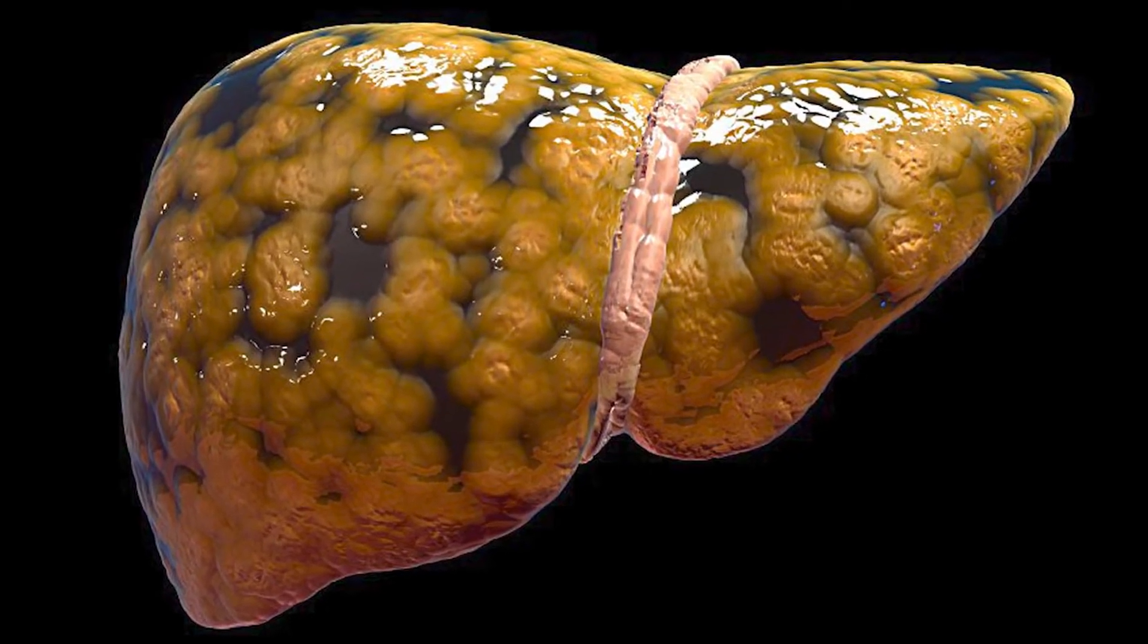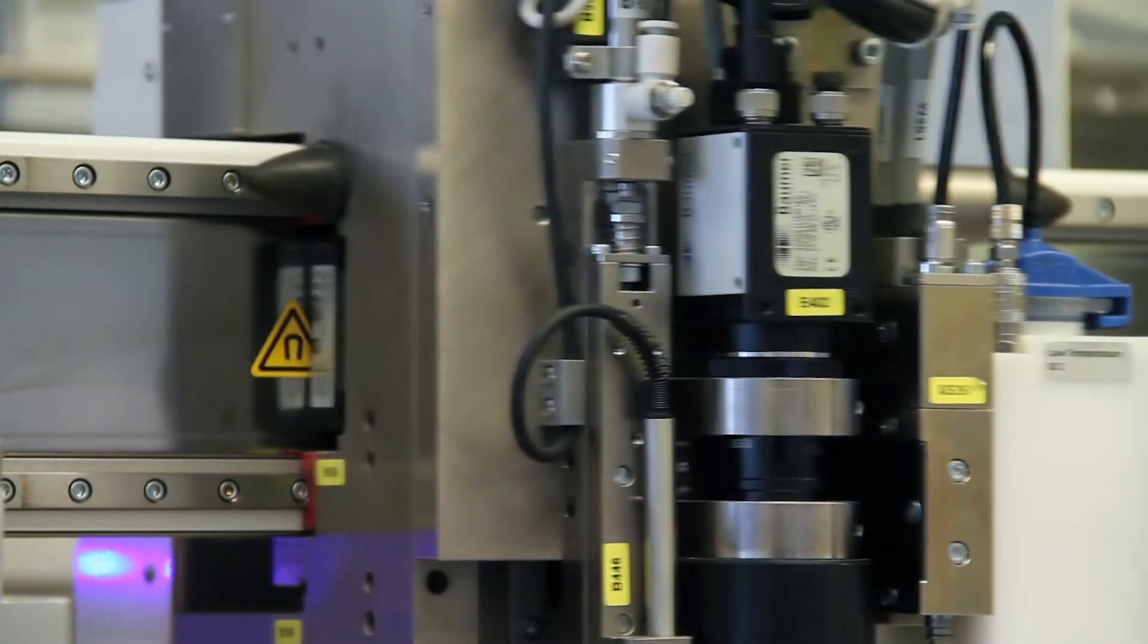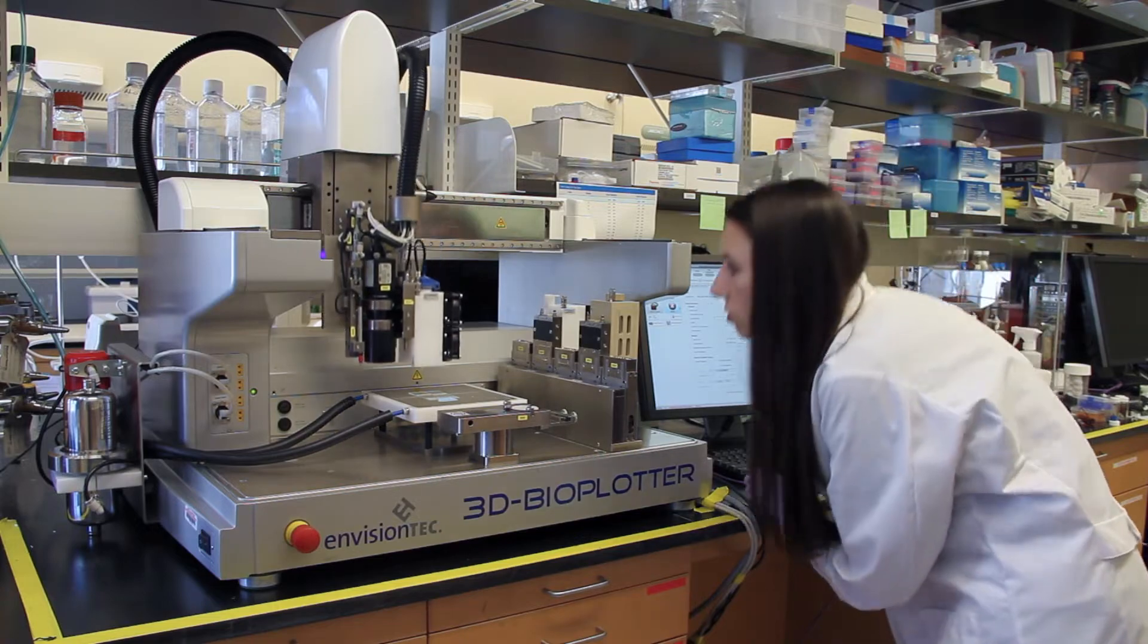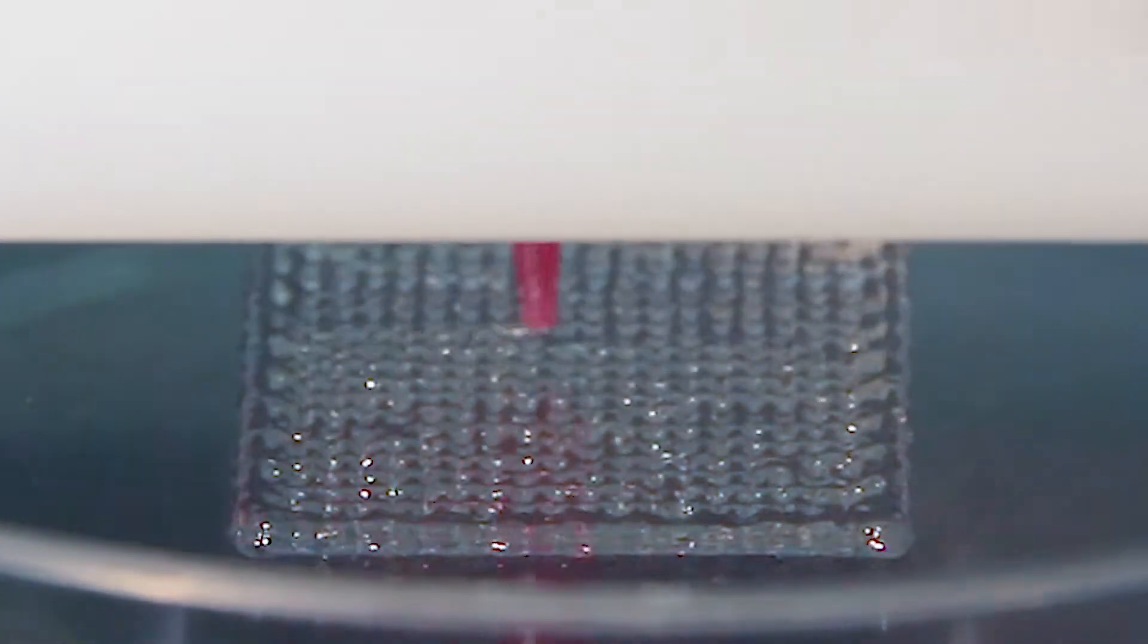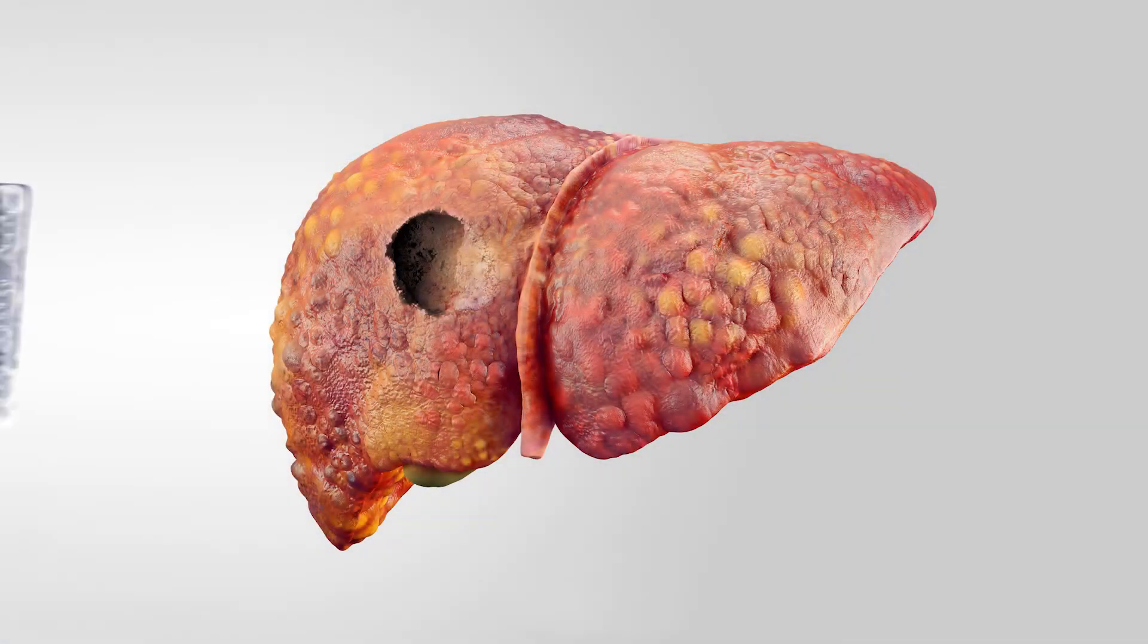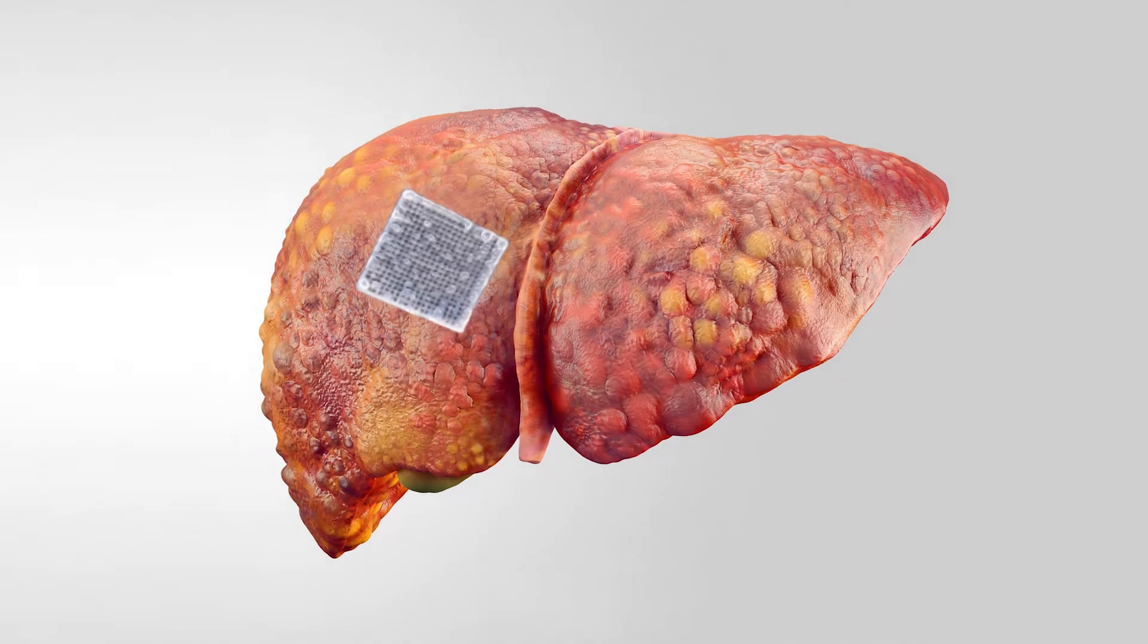But there are certain chronic diseases like alcoholic fatty liver disease that will slowly eat away the majority of your liver. What we want to do is use 3D printing technology to engineer a liver construct in vitro and implant that within a patient to regenerate the remaining liver.